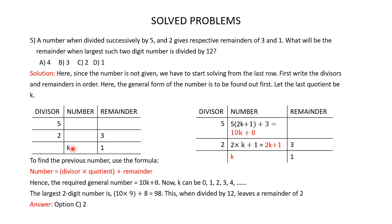Using the formula number = divisor × quotient + remainder: multiply 2 by K and add 1, giving 2K + 1. Then multiply 5 by (2K + 1) and add 3: 5 × (2K + 1) + 3 = 10K + 5 + 3 = 10K + 8. So 10K + 8 is the required general number.